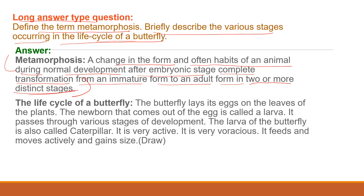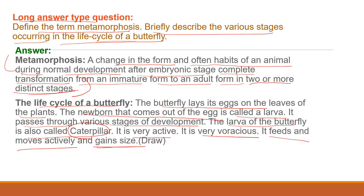Now the life cycle of a butterfly: the butterfly lays its eggs on the leaves of a plant. The newborn that comes out of the egg is called a larva. It passes through various stages of development. The larva of the butterfly is called a caterpillar. It is very active and voracious — it feeds and moves actively and gains size.